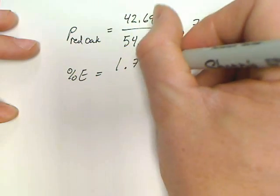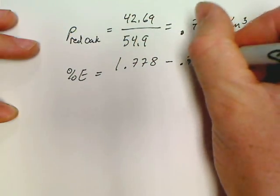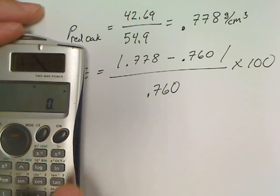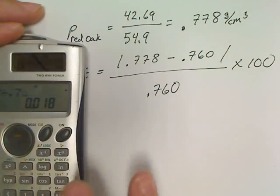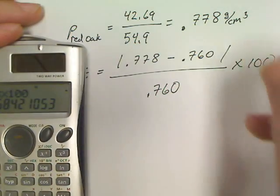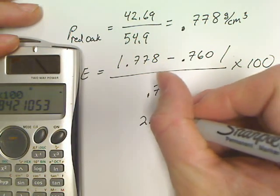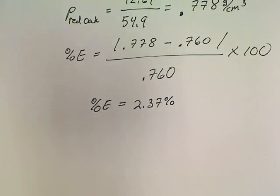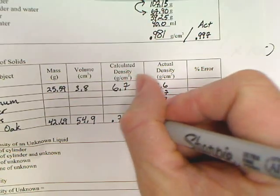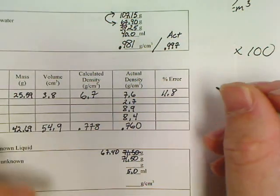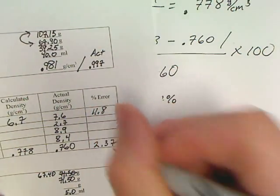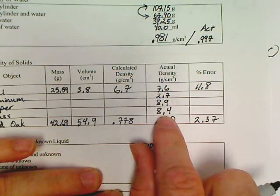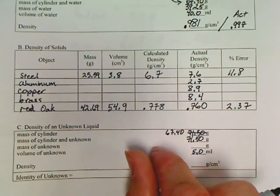And I should also have a percent error for that red oak. 0.778 for me minus it should have been 0.760, over 0.760 times that by 100. 0.778 minus 0.760 divided by 0.760 times 100. I think I've vindicated myself for the bad one on the steel. 2.37%, so my percent error was 2.37%. So that's not too bad. You need to have calculations for every one of these. If you have not got your actual densities yet, there they are.